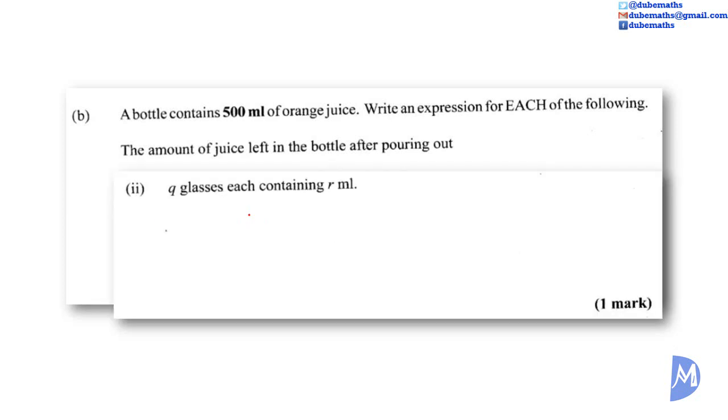Part 2. After pouring out Q glasses each containing R. So if you have Q glasses each containing R ml, then the total amount we poured out would be Q multiplied by R ml. We had 500 initially, so this amount is taken away from 500. So we have 500 ml subtract Q multiplied by R ml. Simplify into 500 minus QR ml.